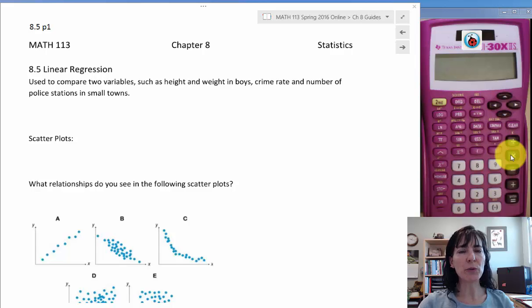8.5 linear regression. We use linear regression to compare two variables such as height and weight in boys, or crime rate and number of police stations in a small town. When we have two variables that we want to compare, linear regression is a way for us to see if there is an association or correlation between the two.